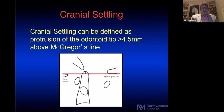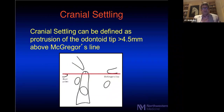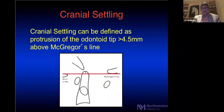There are different measurements people have developed to understand cranial settling on x-rays and CT scans. I chose to use McGregor's line because it's easy to measure and reproducible on CT scans, and I can use it to compare patients within my own group. With the McGregor line — drawn between the hard palate and the opisthion — if the odontoid tip sits 4.5 millimeters or more above that line, that is considered cranial settling.